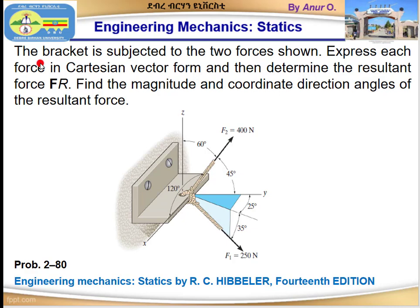Let me read the question: the bracket is subjected to the two forces shown. Express each force in Cartesian vector form and then determine the resultant force FR. Find the magnitude and coordinate direction angles of the resultant force. Let us first understand the question — this bracket is subjected to two forces.